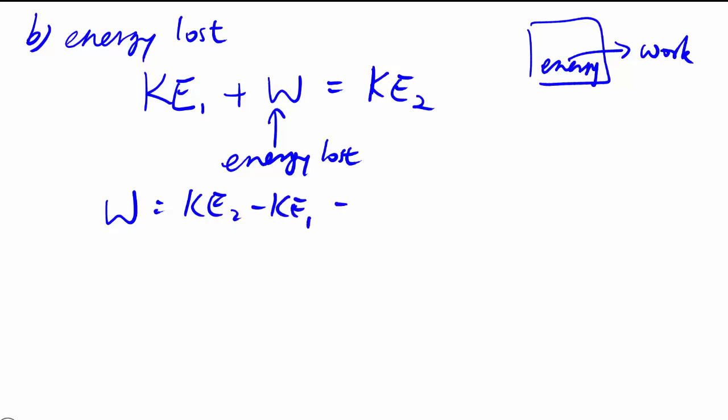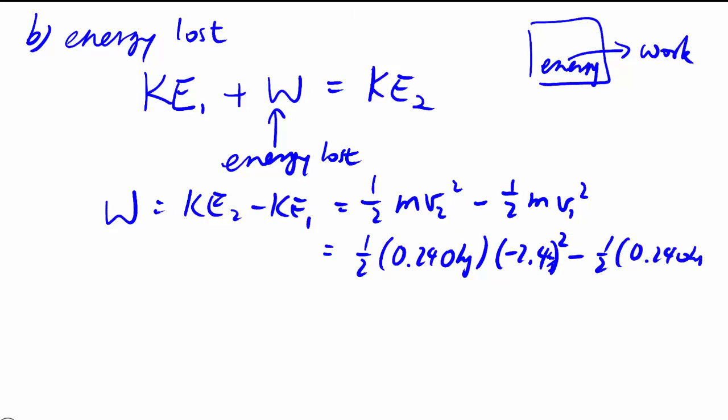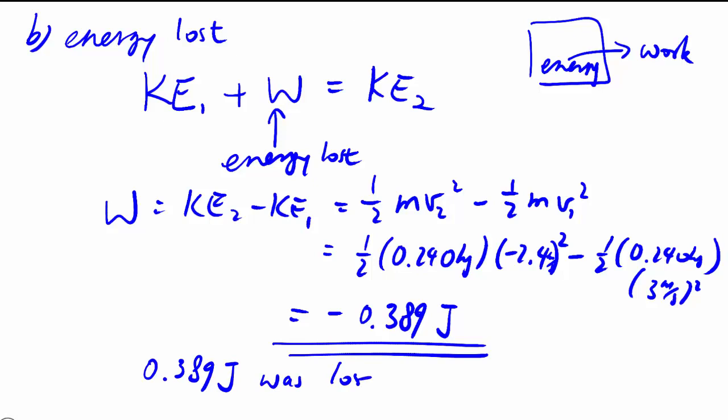KE2 minus KE1, no surprise there - final energy minus initial energy. The only energy we care about is kinetic energy, which we have the speeds for. So that's one half, 0.24 kilograms times my final speed squared minus one half times 0.24 times 3 meters per second all squared. And I end up with a negative number as I expect. So we're doing negative work, therefore losing 0.389 joules of energy in the system. That's my answer for part B.